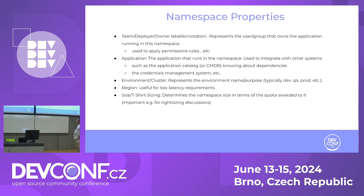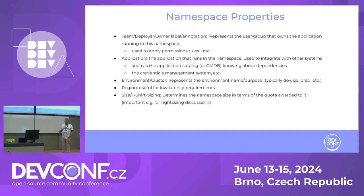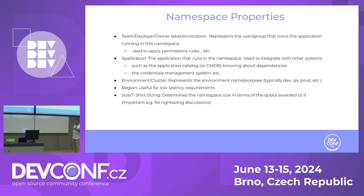What are interesting properties for a namespace? First we have the team, developer deploy owner label — we want to know who is responsible for this namespace and to which group it belongs. I can tell you we had escalations where a customer did not know who was responsible for a namespace and thought it could be deleted, but it was a critical one. We also need the application name, the environment — for example dev, staging, prod — and the region, as close as possible to us.